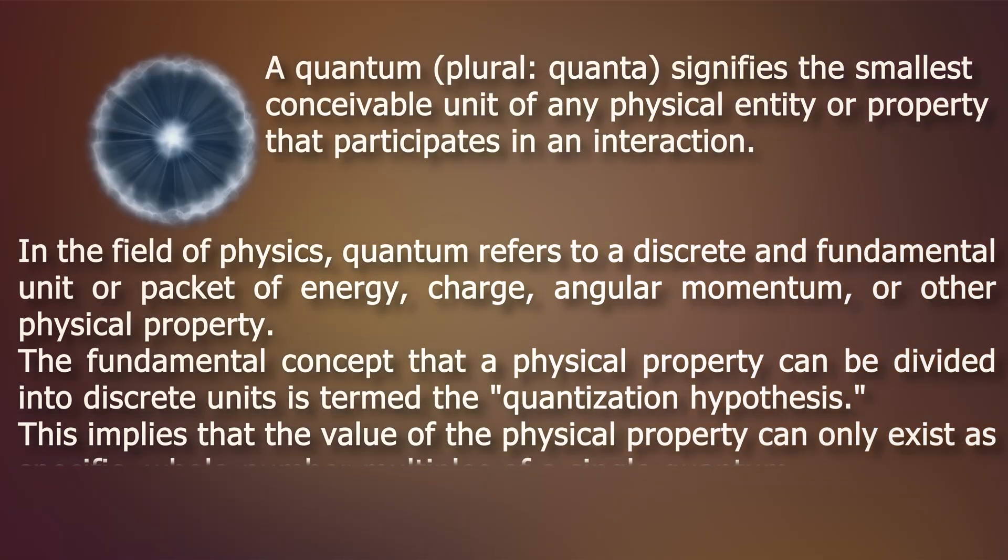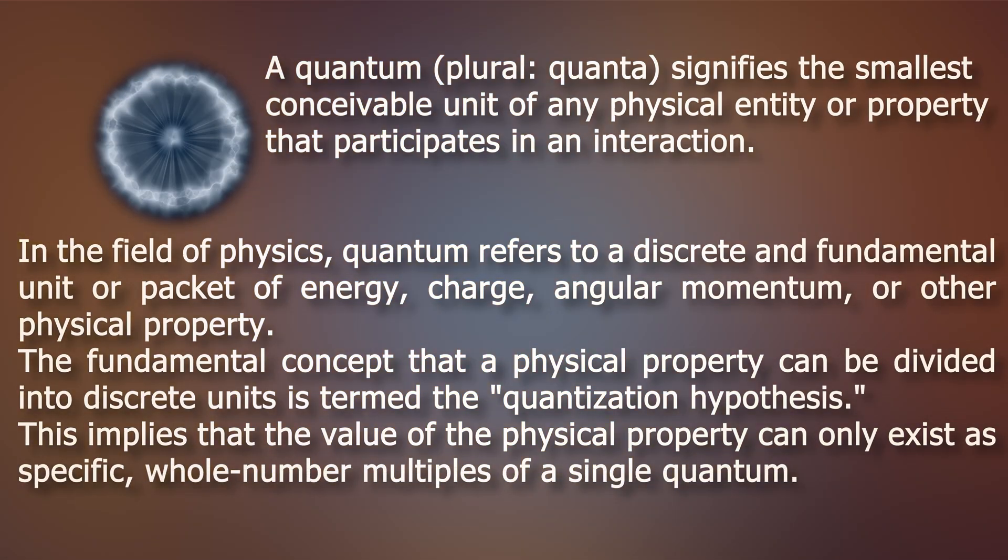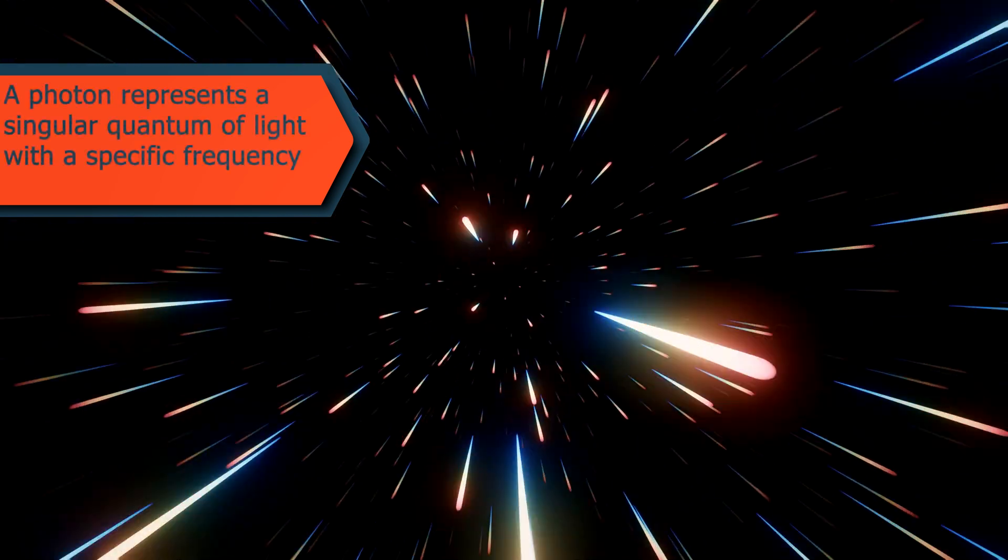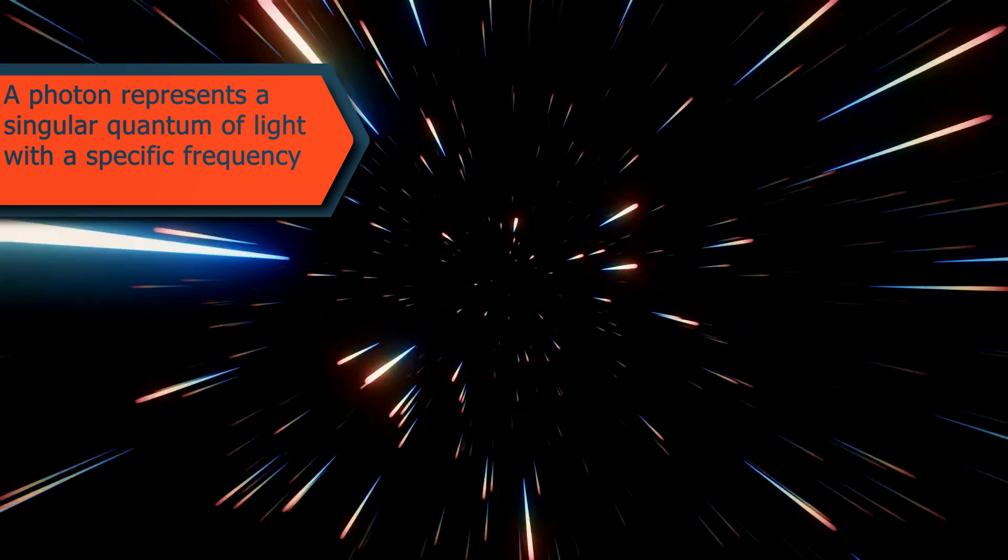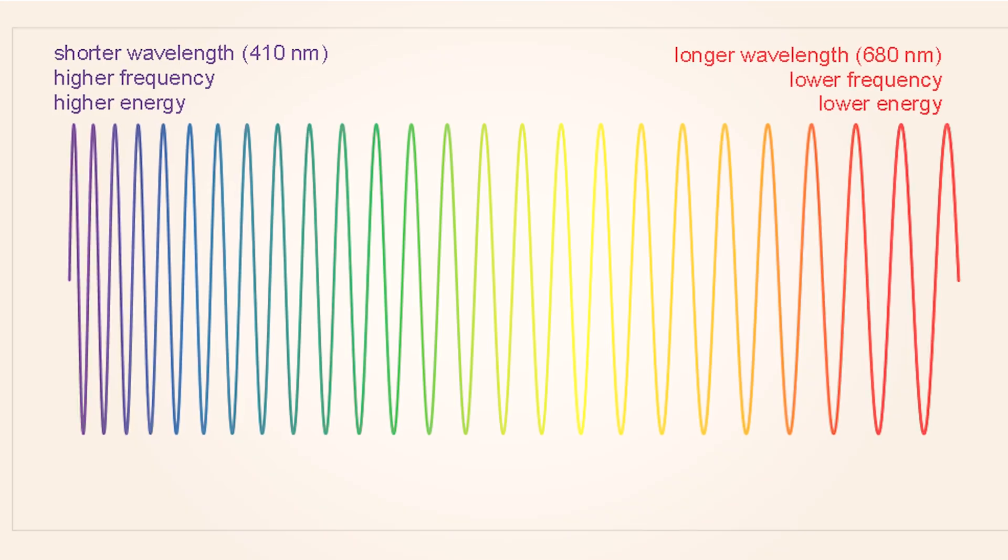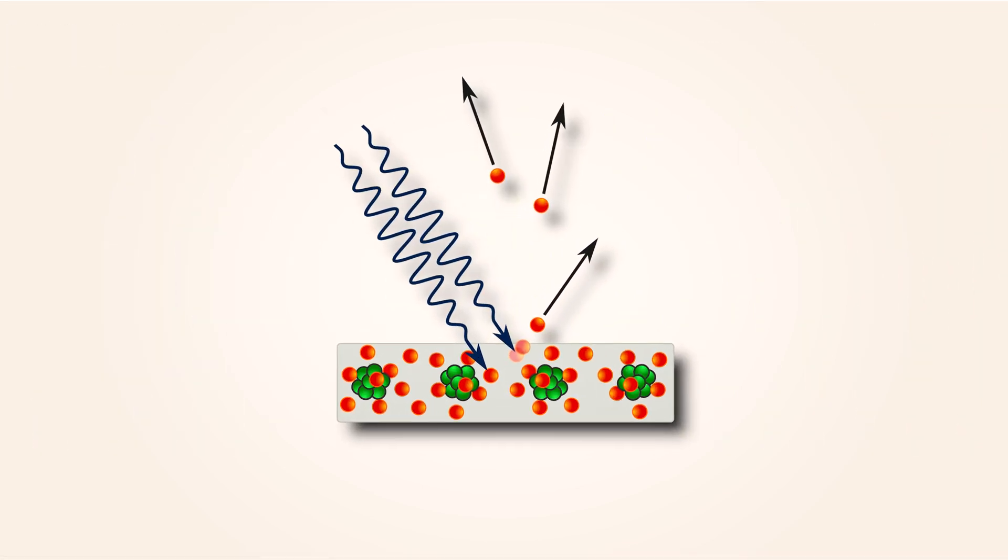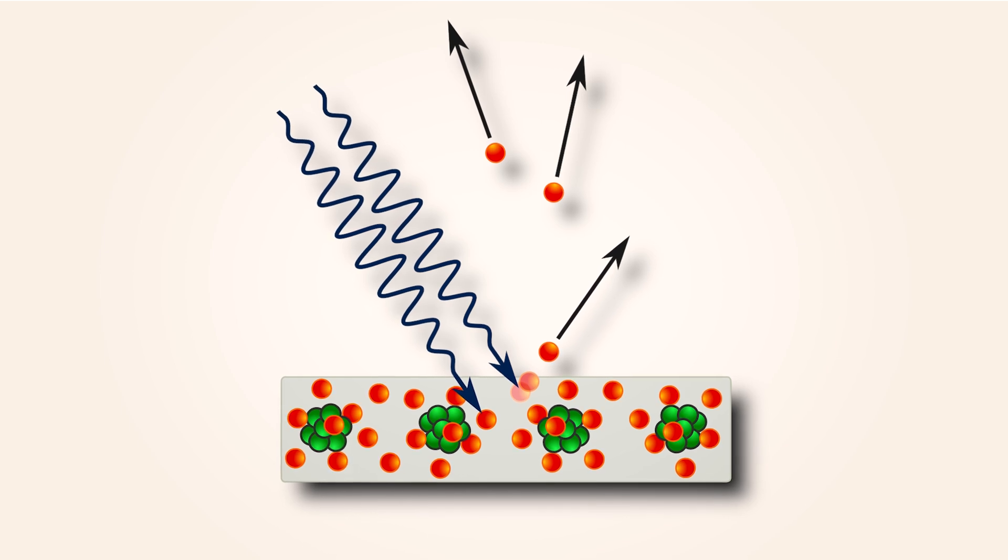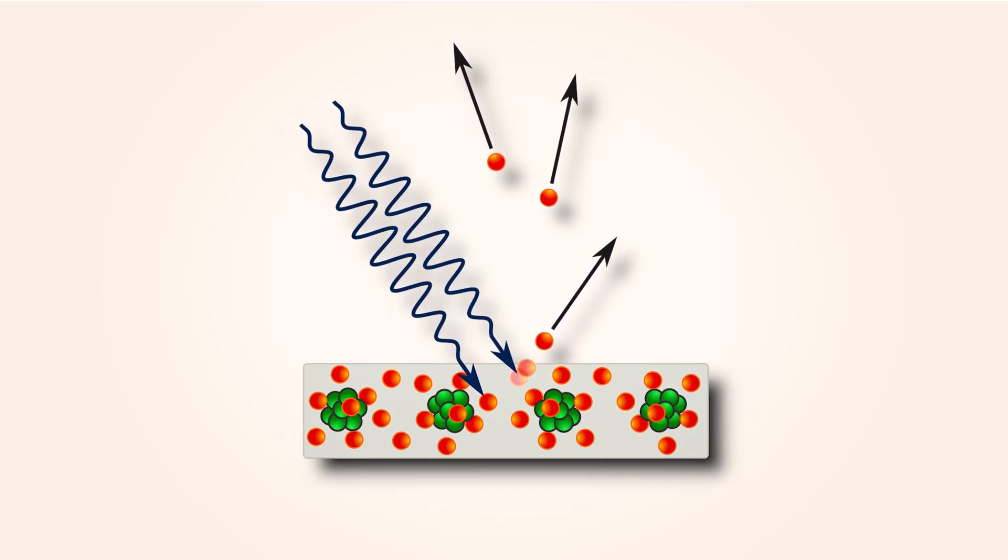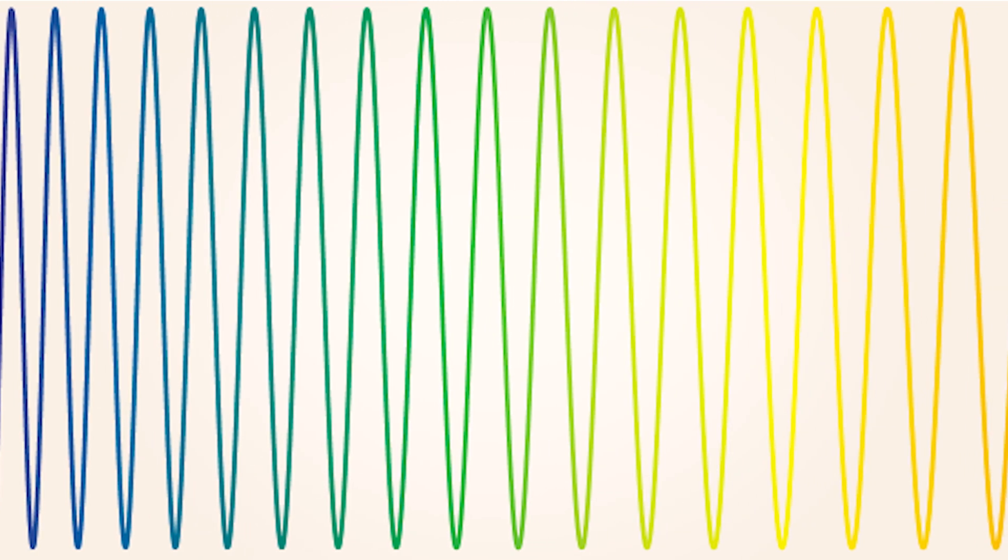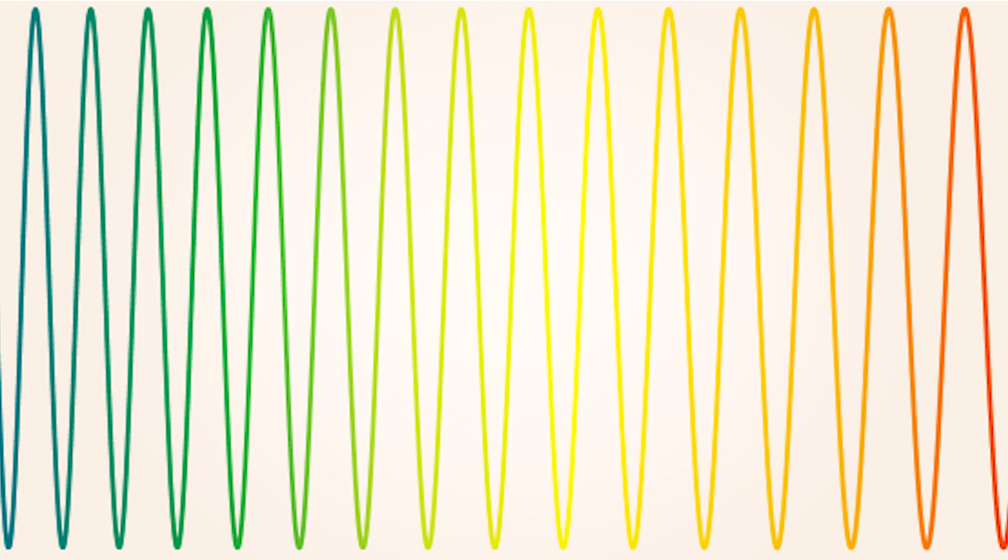This implies that the value of the physical property can only exist as specific whole number multiples of a single quantum. For instance, a photon represents a singular quantum of light with a specific frequency or any other type of electromagnetic radiation. Light, despite appearing as a continuous electromagnetic wave on a macroscopic scale, behaves on a submicroscopic level by being emitted and absorbed in discrete quantities known as quanta in both energy and momentum. Specifically, for light of a given wavelength, all emitted and absorbed quanta exhibit uniformity in both energy and momentum.